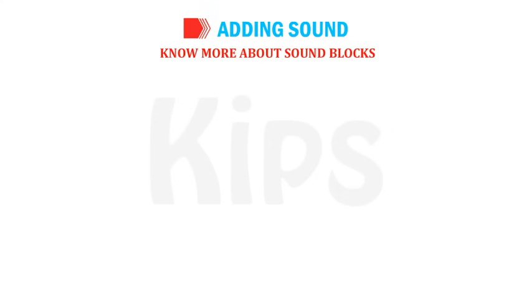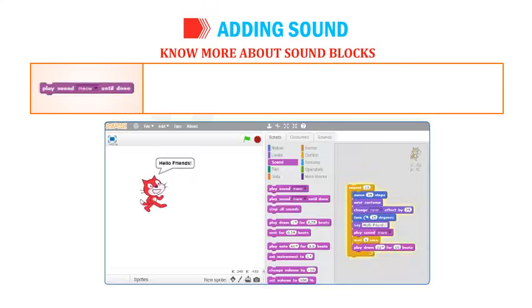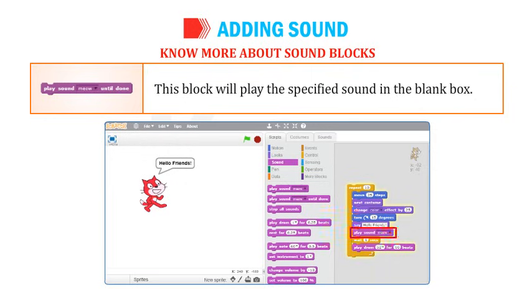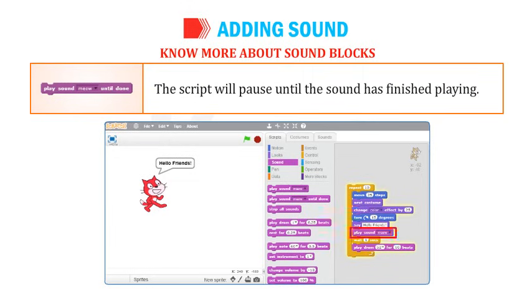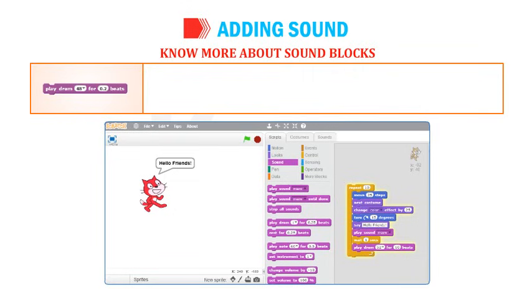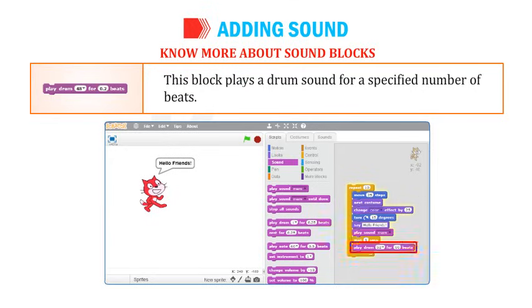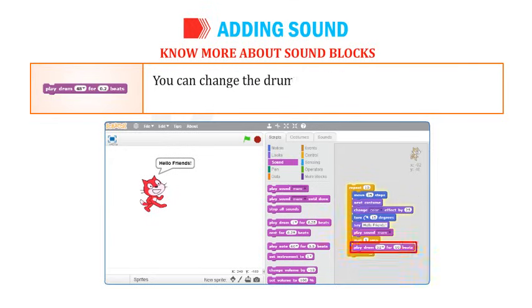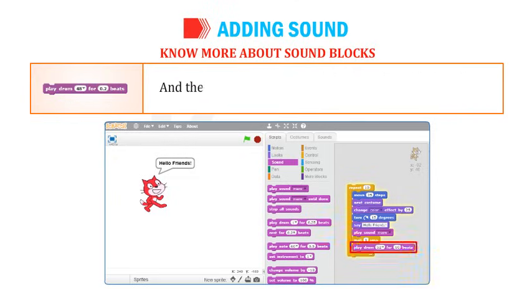Play Sound Meow Until Done plays the specified sound and the script will pause until the sound has finished playing. Play Drum 48 for 0.2 Beats plays a drum sound for a specified number of beats. You can change the drum type using the drop-down arrow and change the number of beats by editing the value in the box.